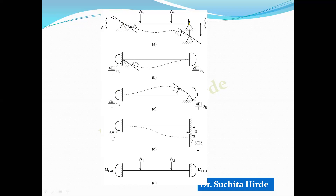Similarly, the final moment at B, MBA, equals 2EI/L × theta A + 4EI/L × theta B − 6EI×delta/L², plus the fixed end moment MFBA. Here we are considering the right support is sinking, so we use minus 6EI×delta/L².